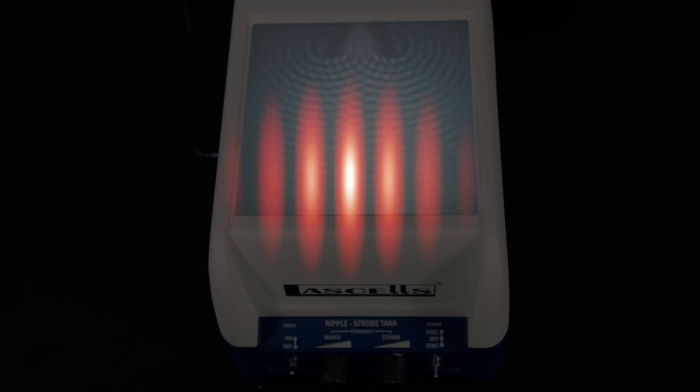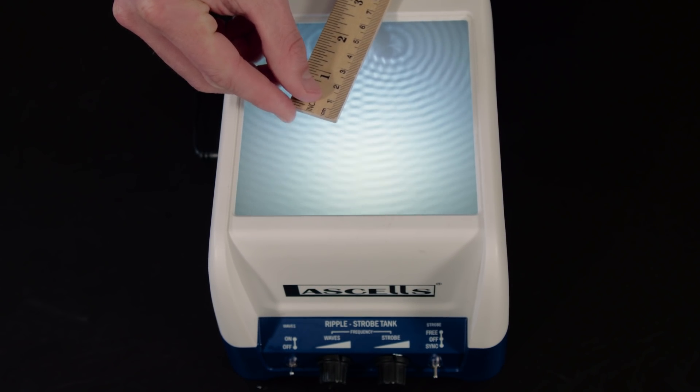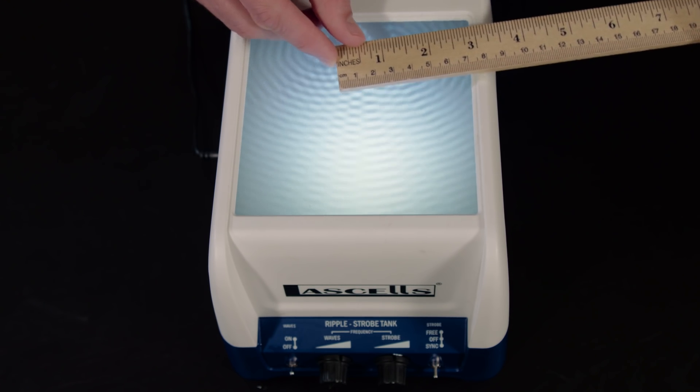In light wave diffraction, constructive interference corresponds with bright fringes and cancellation produces dark fringes. Because the wavelength is so easy to measure, the diffraction formula can be used to perform interference experiments with waves that actually look like waves.